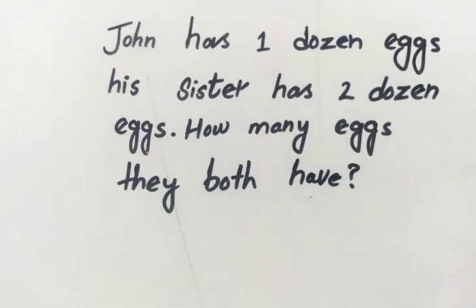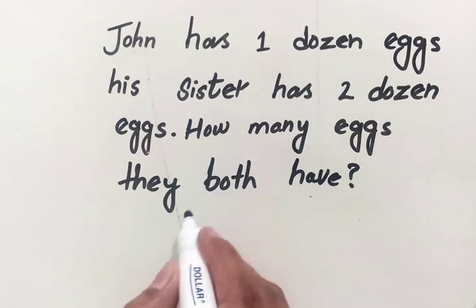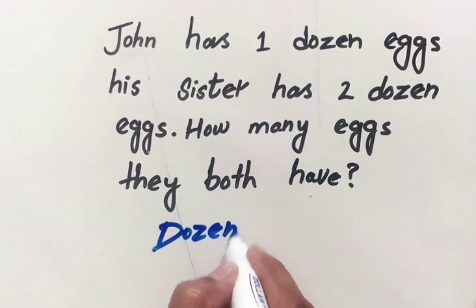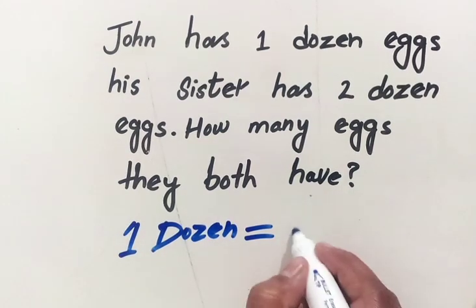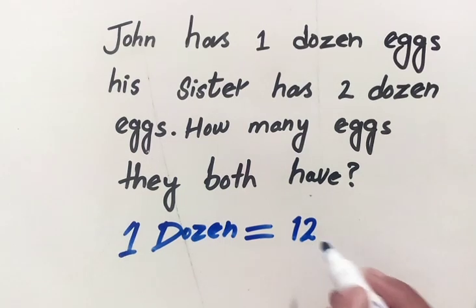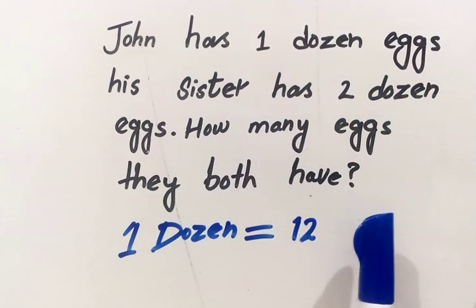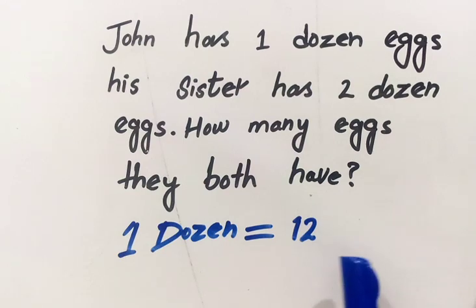So, in one dozen, one dozen is equal to 12, right? For example, if we have one dozen eggs it means we have 12 eggs. And if we have one dozen something else, it might be oranges or another thing, it also means that another thing are also 12 in numbers.